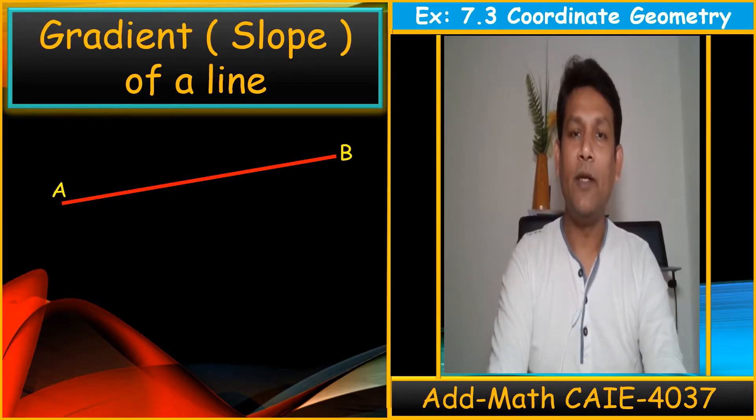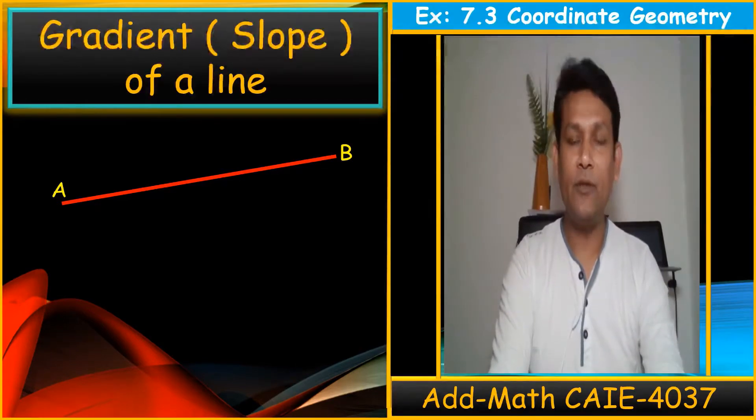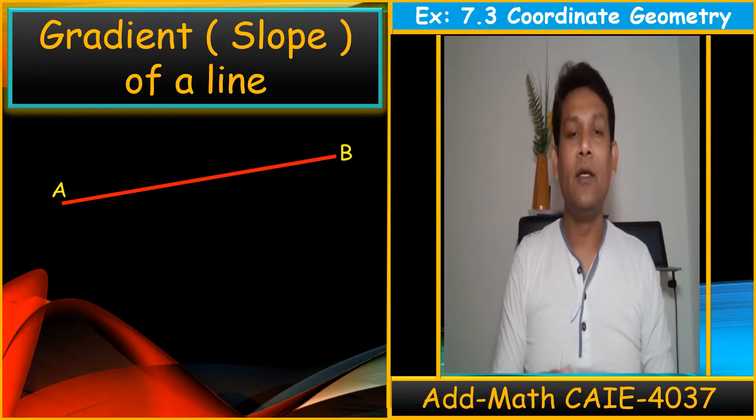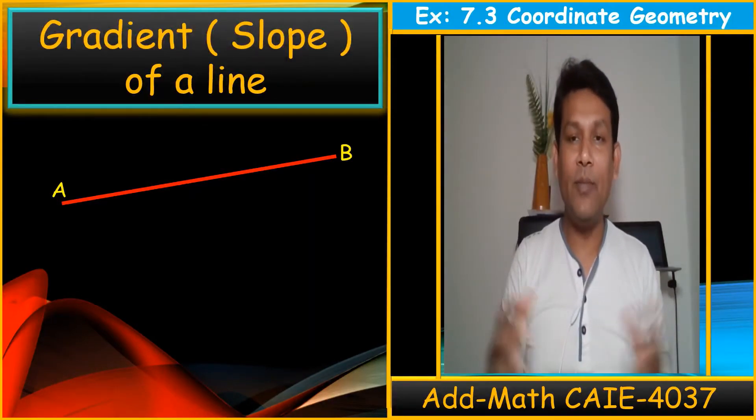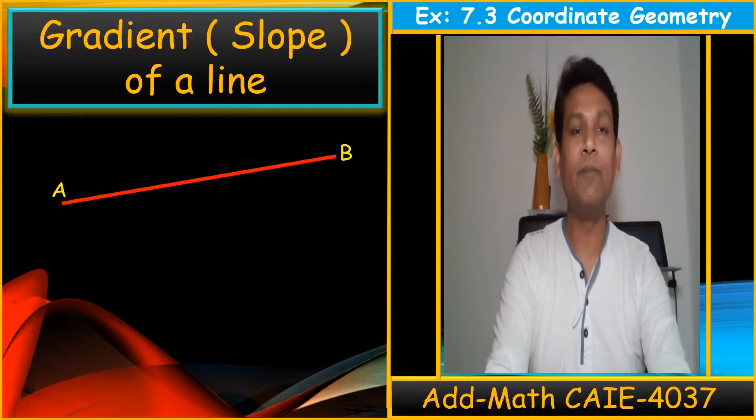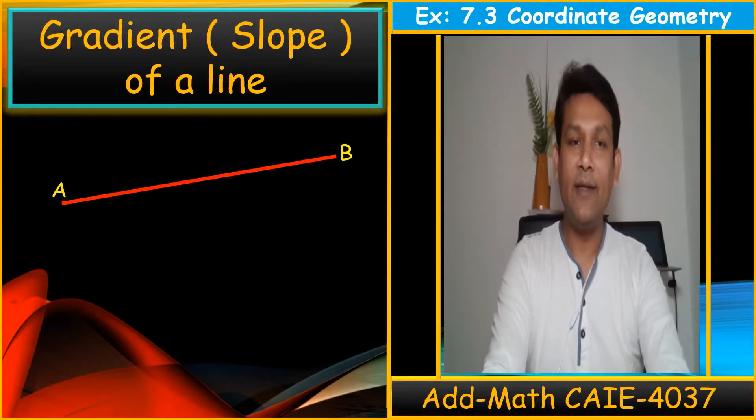Hi everyone, welcome back to my channel Vertex Monogroid. Today we are doing exercise 7.3. Before starting 7.3, I would like to say something about which formulas are required in this exercise. In the next video, I will be doing complete solutions of the questions of 7.3. Today just an idea of how we can use the formula in exercise 7.3. So first of all, gradient, the slope of a line.